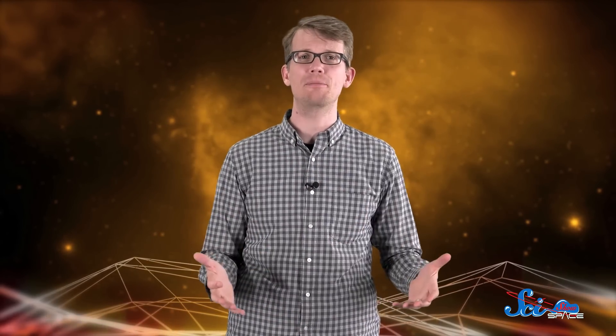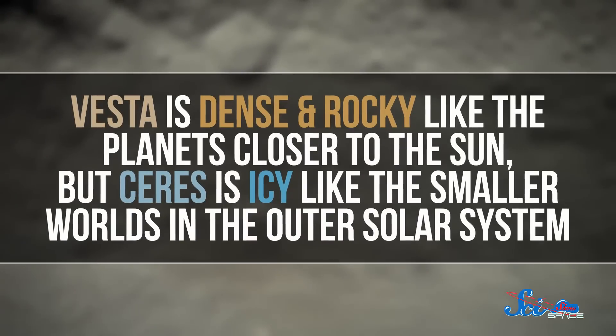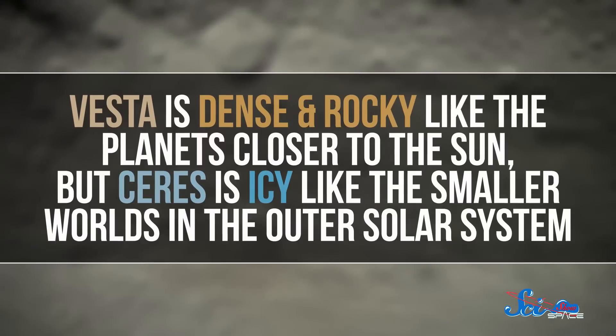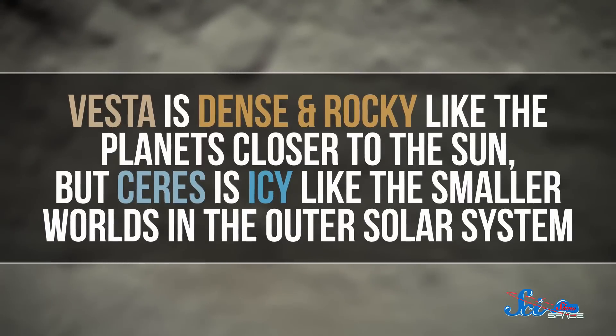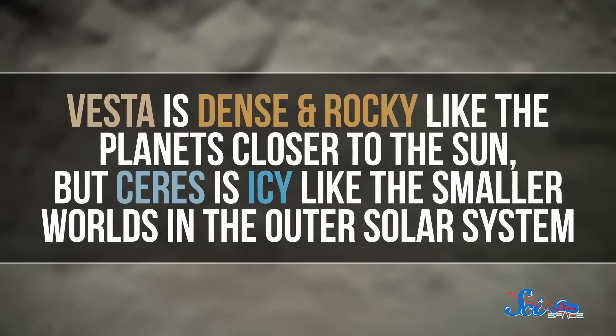Vesta and Ceres were selected as targets because they're so different from each other. Vesta is dense and rocky, like the planets closer to the sun, but Ceres is icy, like the smaller worlds in the outer solar system. So visiting both of them was like getting double the science in one mission.